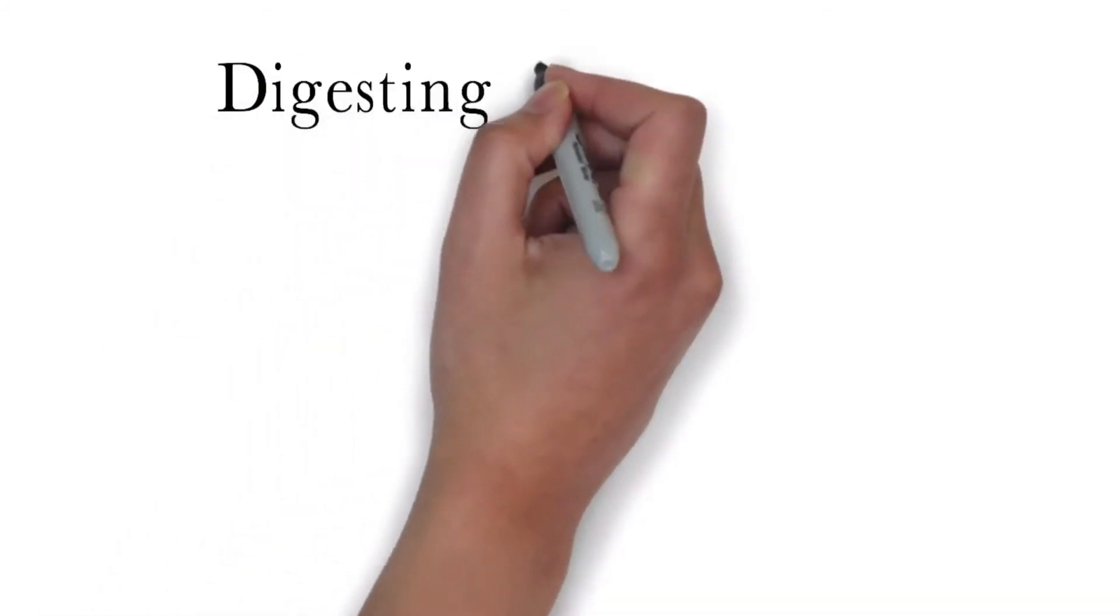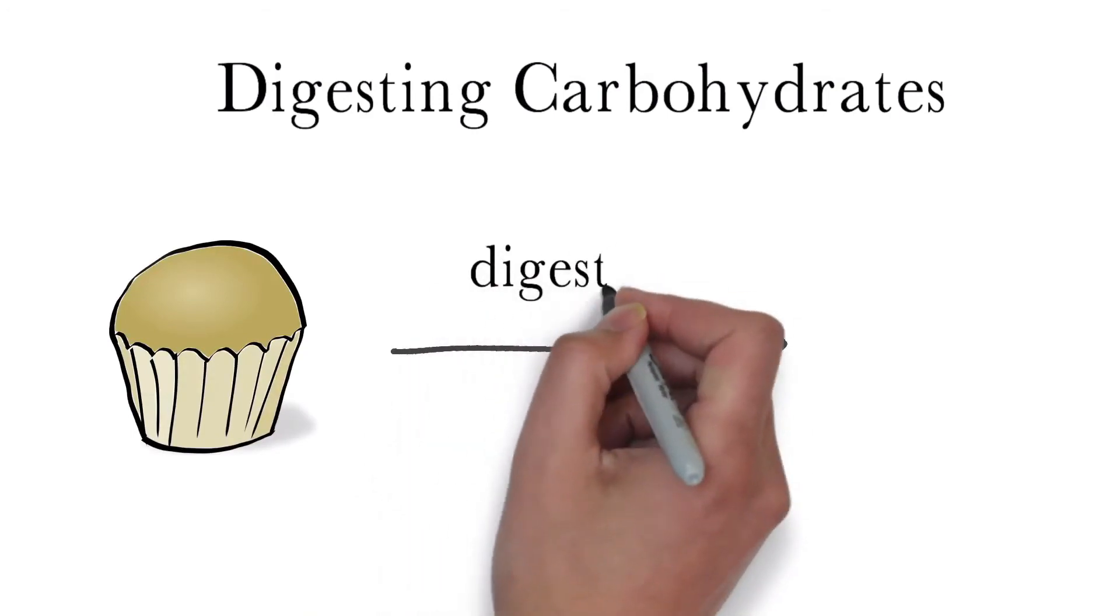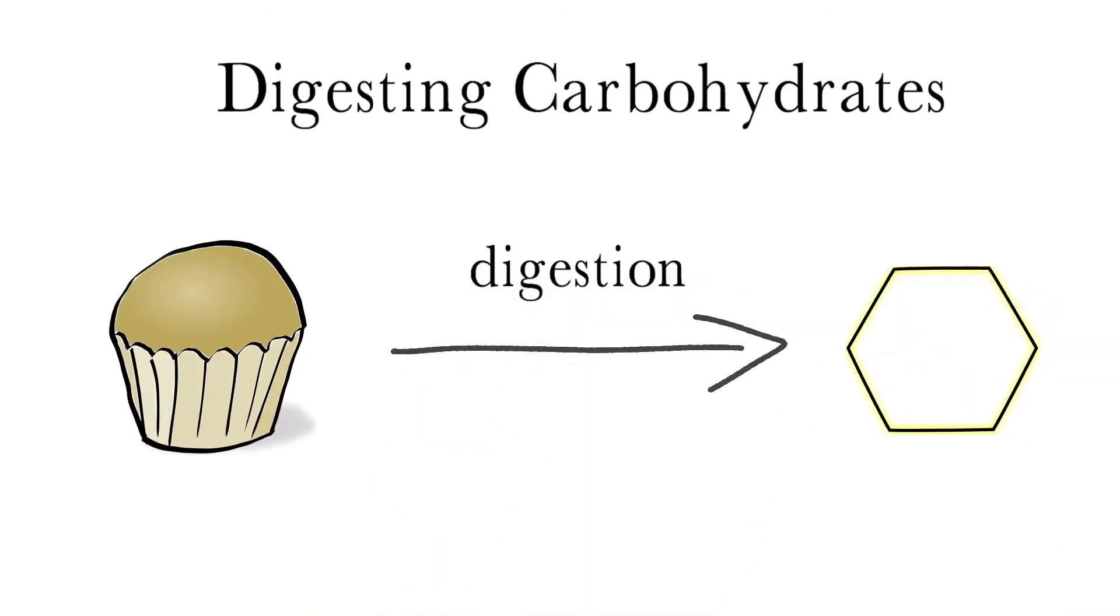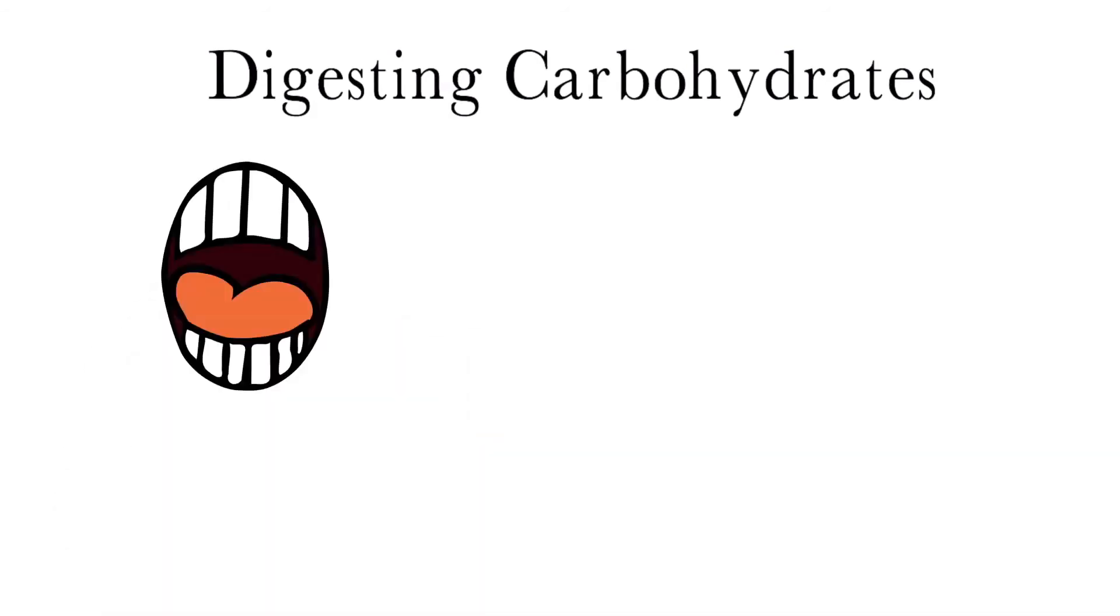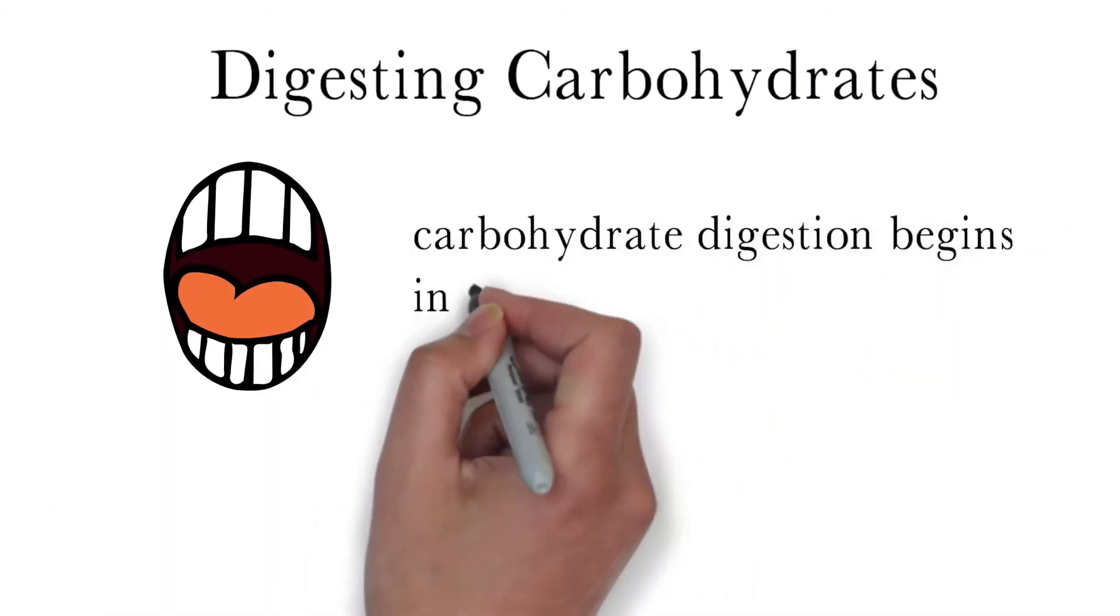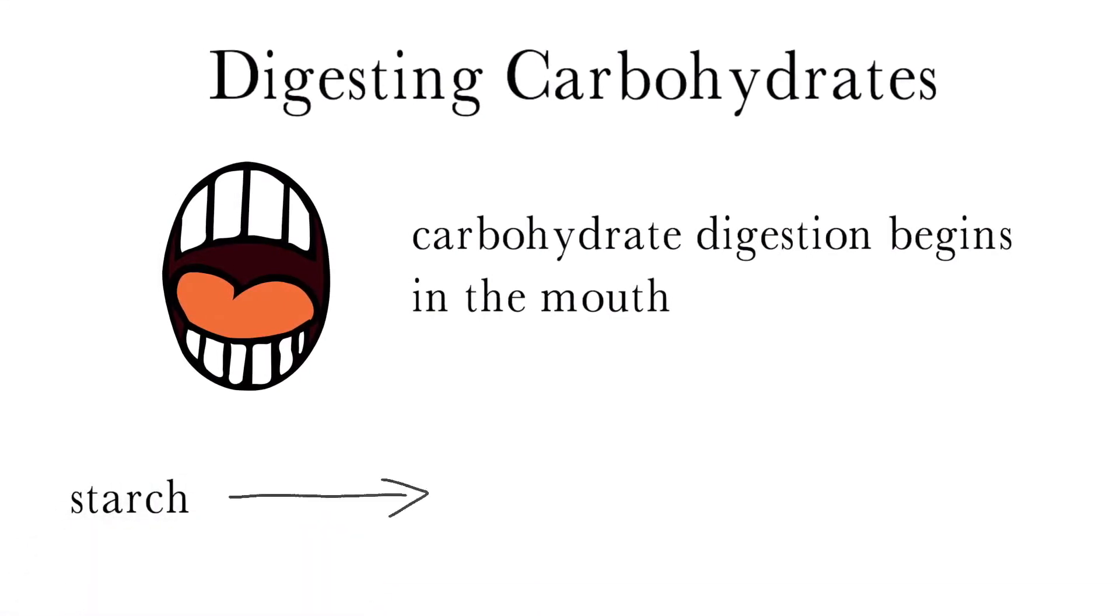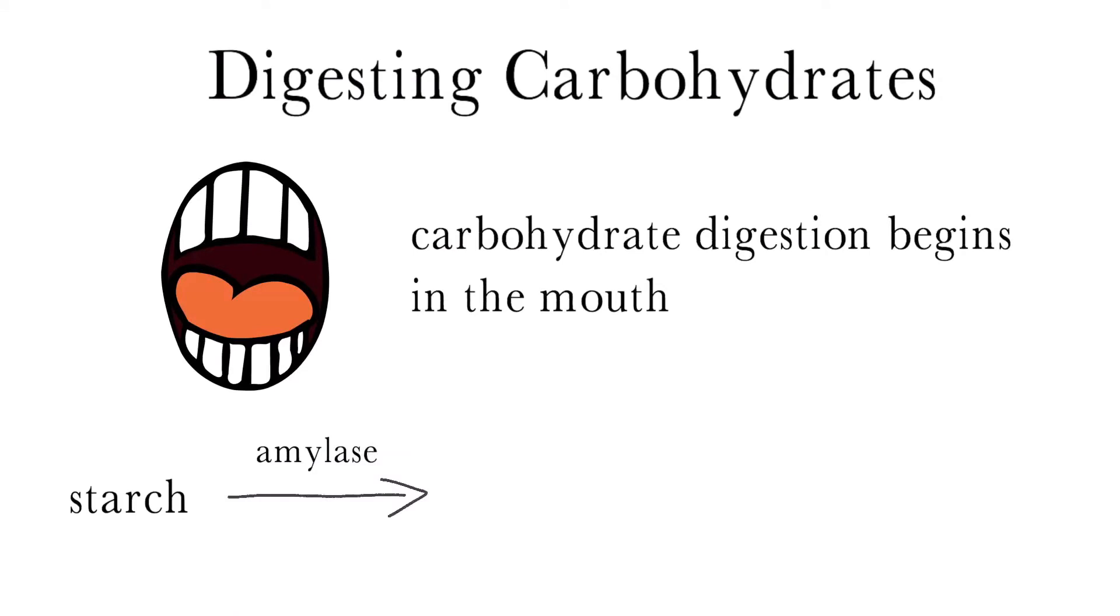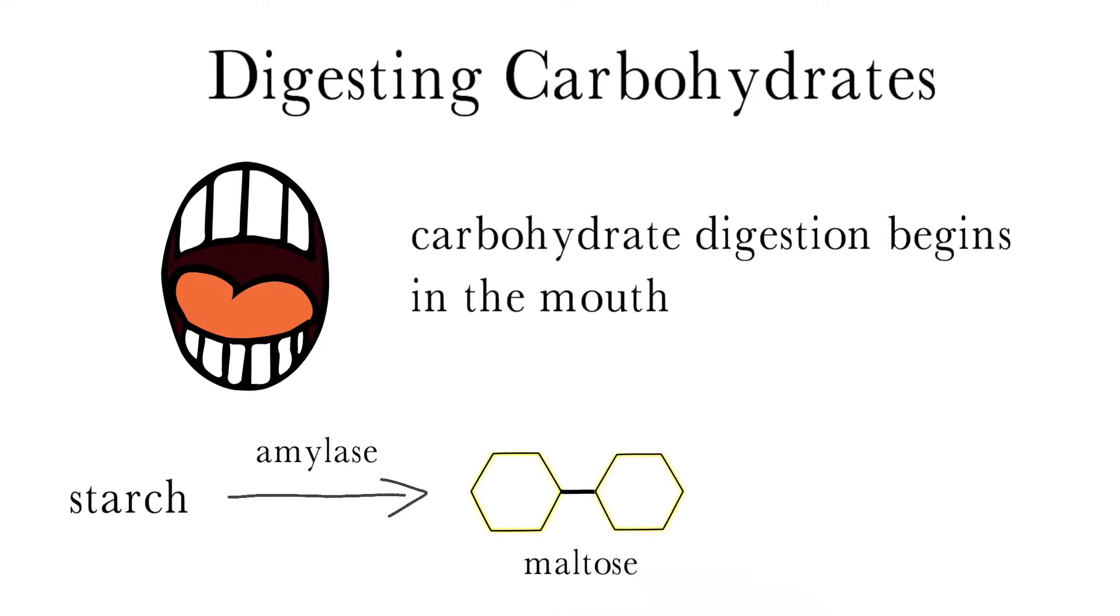When we eat carbohydrates, through digestion, the body breaks them down into their monosaccharide components, mostly glucose, that the body can later absorb and use for its energy requirements. As soon as we consume carbohydrates, they immediately begin being digested in the mouth by the mechanical action of chewing and enzymatic action. Starch is broken down by an enzyme called amylase, which is present in our saliva. Amylase breaks down starch into maltose and other small polysaccharides. Food usually doesn't stay too long in the mouth, so little digestion occurs here.